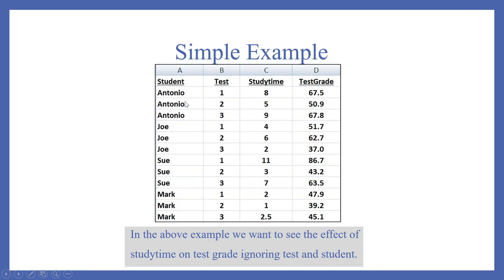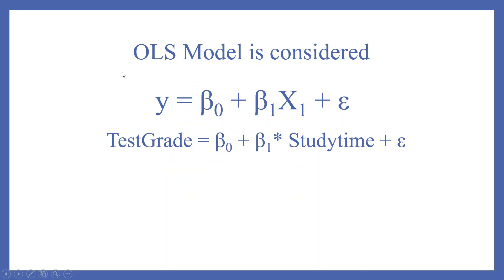Let's take an example. In the first column we have student, second column test — three types of tests: one, two, three — and then study time and test grade. In the above example, we want to see the effect of study time on test grade, ignoring the test and the student. The OLS model considered here is: y = β₀ + β₁x₁ + error term.